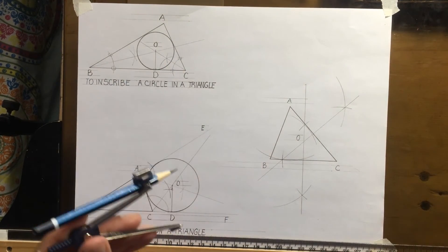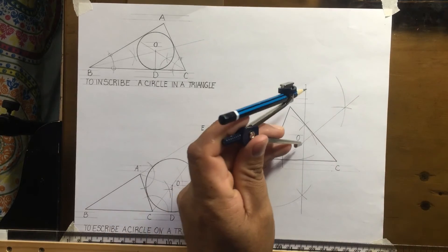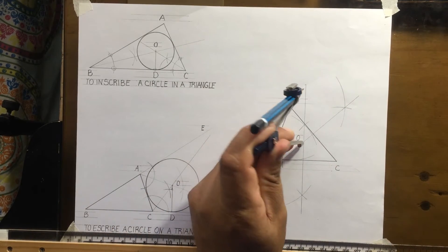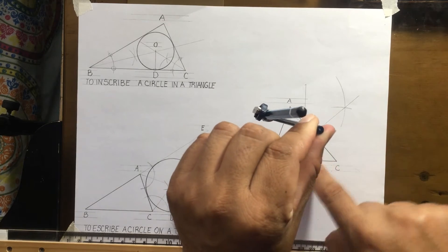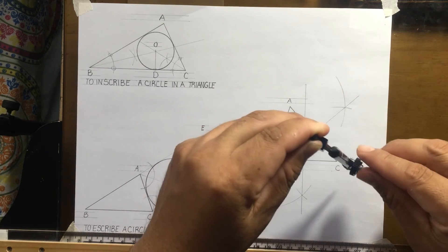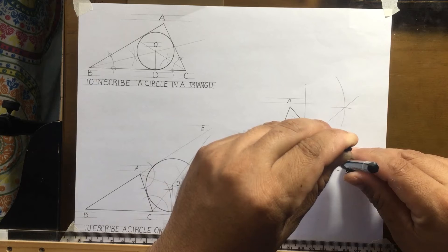What I do now, I set my compass where these two lines intersect. I want to open to any of the vertices, either OA, OB, or OC. I'll open to OC.